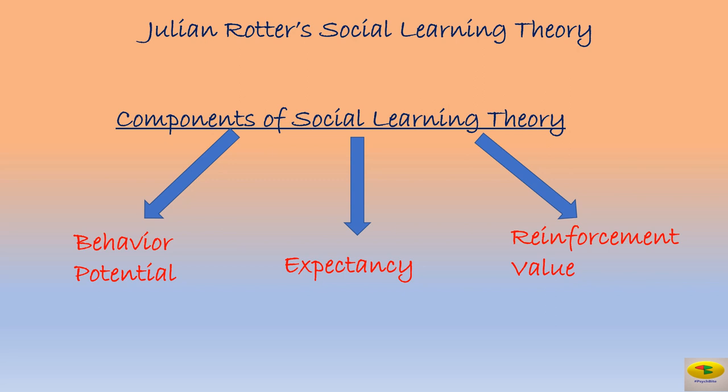The third one is the reinforcement value — it refers to the desirability of the outcome. Based on the components of social learning theory, Julian Rotter has come up with a particular formula: behavior potential is the function of expectancy and the reinforcement value. The probability of a student studying for his exams depends on the function of his expectancy — that is, studying leading to good marks — and the reinforcement value, that is the desirability of getting good marks.